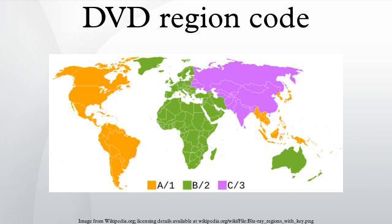Indian Disney discs contain only the region 3 code. European region 2 DVDs may be subcoded D1 to D4. These are United Kingdom or Euro-only releases. D2 and D3 are not sold in the UK and Ireland. D4 are distributed throughout Europe. Any combination of regions can be applied to a single disc — for example, a DVD designated region 2/4 is suitable for playback in Western Europe, Oceania, and any other region 2 or region 4 area.